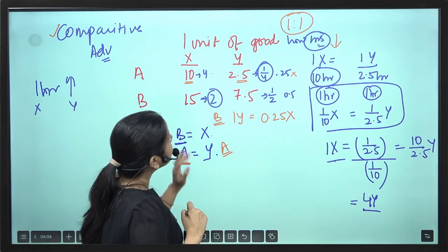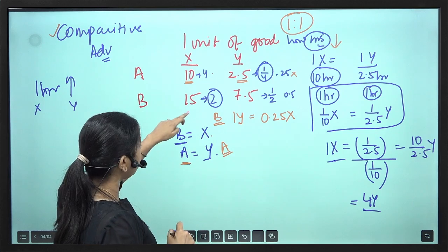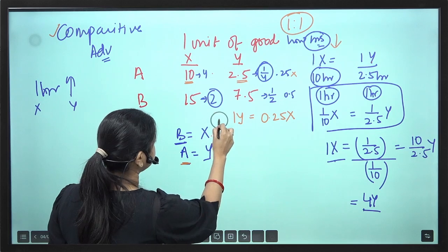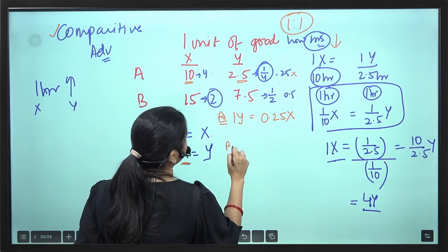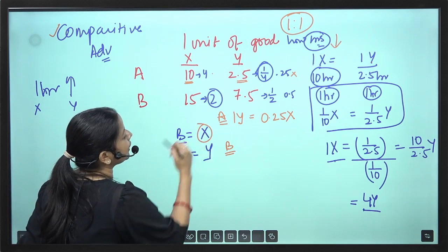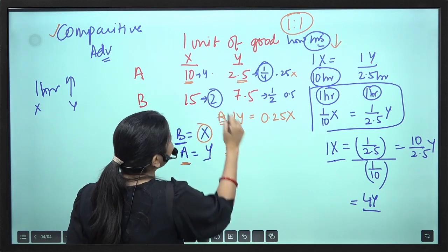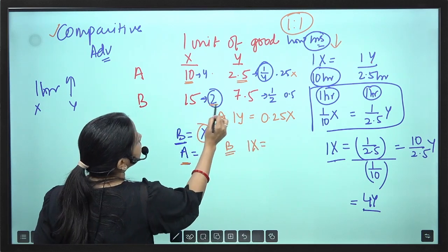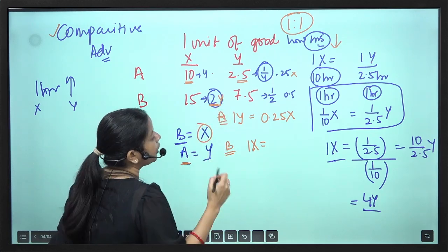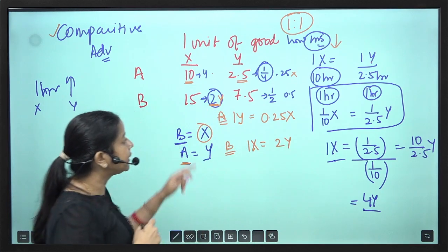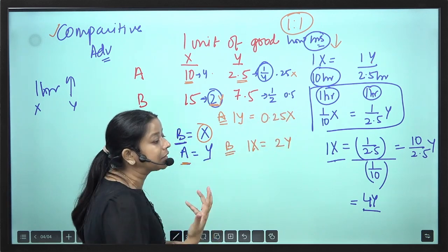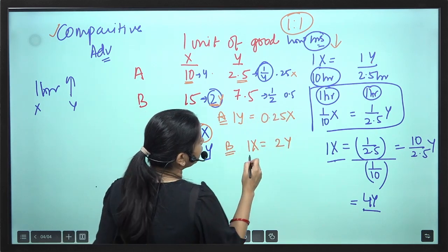Now let's talk about Country B. Country B is producing X. It says: if I give you 1X, what is my opportunity cost? I am foregoing 2Y. So I need a minimum of 2Y in return. Country B will need a minimum of 2Y if it gives 1X. We write the terms of trade as: 1X equals 2Y from Country B's perspective.